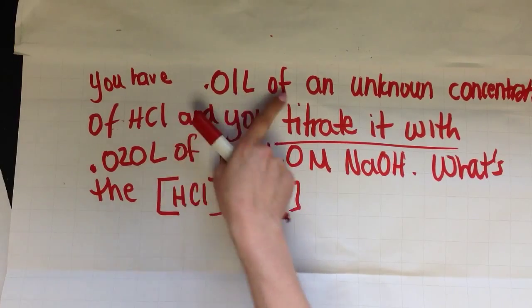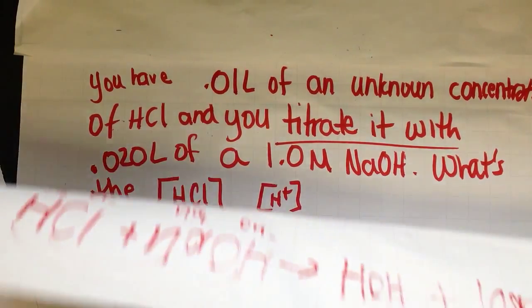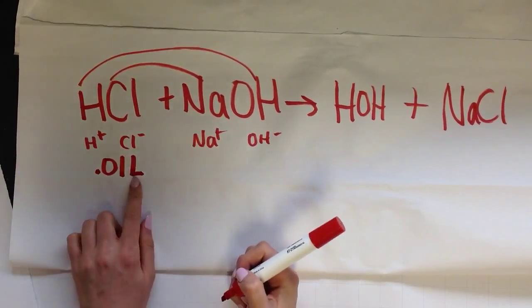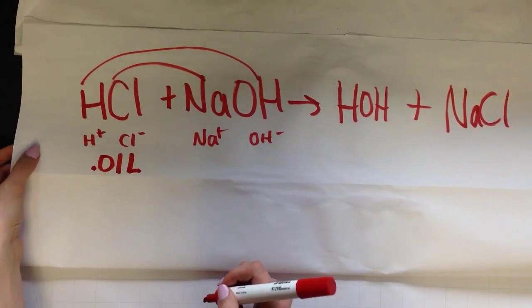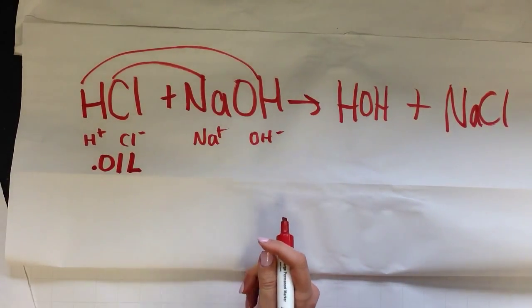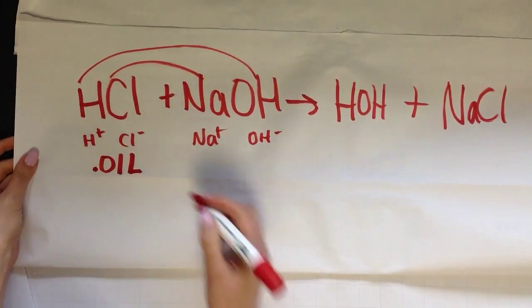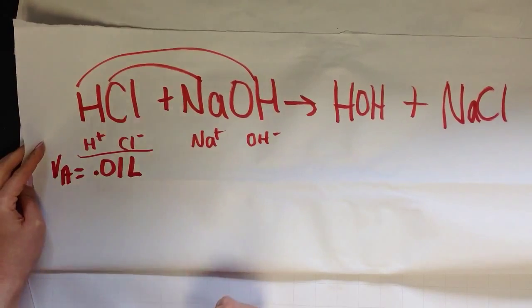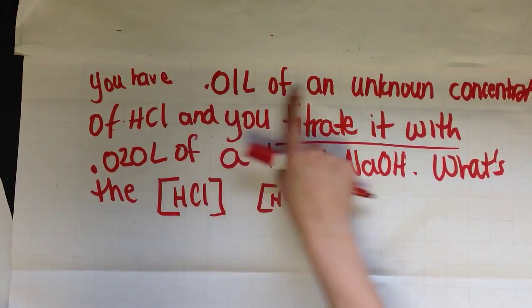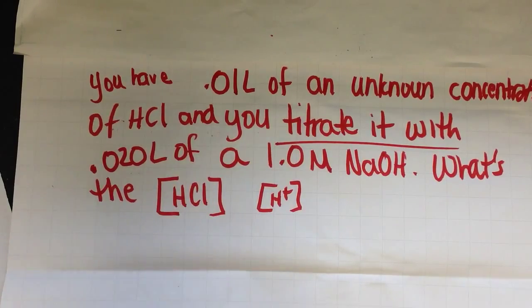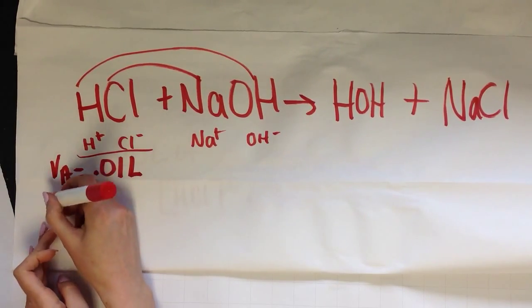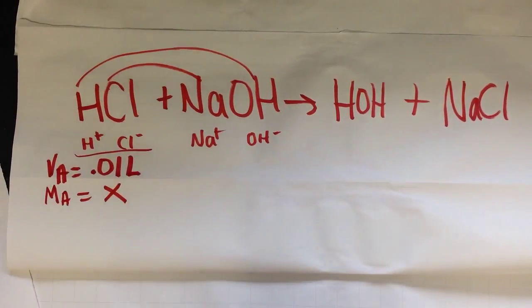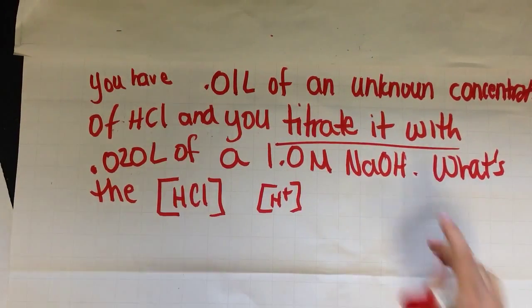So let's go back to our problem. I have 0.01 liters of an unknown concentration of HCl. So we'll put that here. 0.01 liters. Let's always make sure that we're using liters and not milliliters. If you have to convert, please do so. This is important. There's 1,000 milliliters in one liter. So this is under my HCl. So this is my volume of my acid. Let's keep reading. I have an unknown concentration of my acid. So my concentration, which is big M, molarity, of my acid, is unknown. We'll make that X.